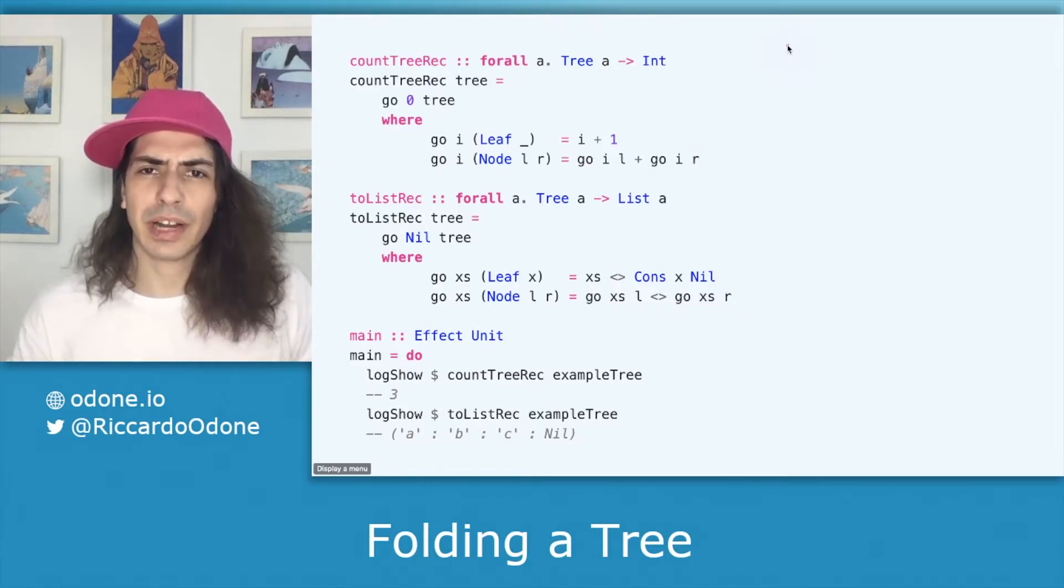There are a ton of commonalities between these two functions. In particular they have the exact same structure but they differ only in three aspects. The first one is the initial accumulator. In the case of counting the leaves it's an integer and it's zero and in the case of summarizing the tree to a list of characters it's an empty list.